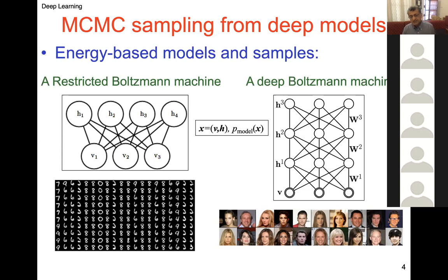When we present a particular value of V, we should be able to give its probability — the model assigns a probability to that X. One possible use is computing the probability, though that might not be the most interesting use since every face will have a very low probability value by itself.